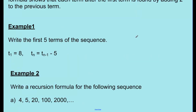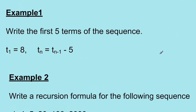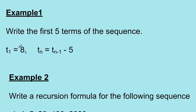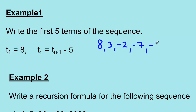Write the first five terms of this sequence: T1 equals 8, and Tn equals Tn minus 1 minus 5. The first term is 8. The next term: 8 minus 5 is 3. Then: 3 minus 5 is negative 2. Then: negative 2 minus 5 is negative 7. And finally: negative 7 minus 5 is negative 12.